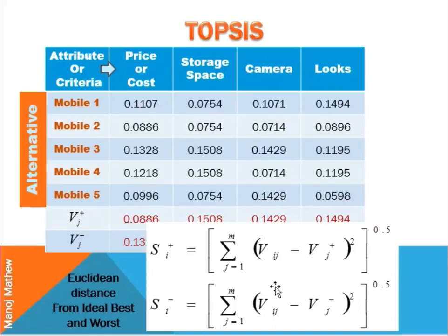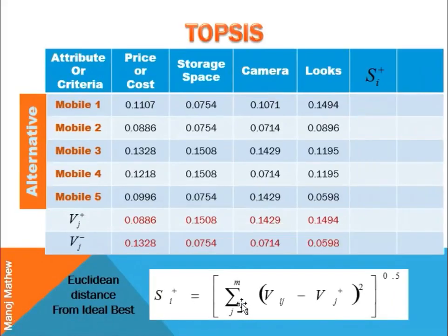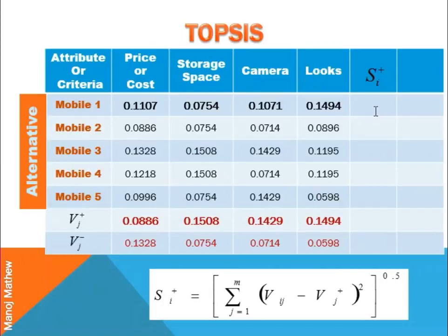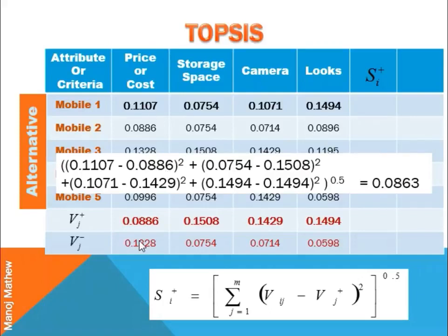This is the formula for calculating the Euclidean distance from the ideal best and ideal worst. For the first alternative, Mobile 1, we take the difference between each value and the ideal best, then square it. Finally, we sum all the squared values and take the square root, which gives a value of 0.0863.